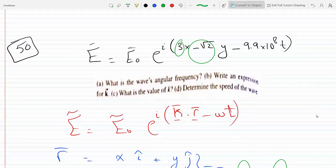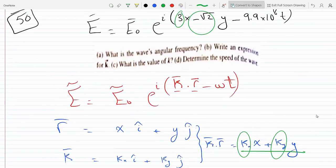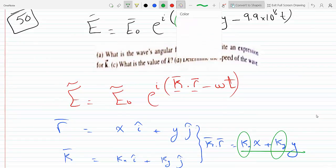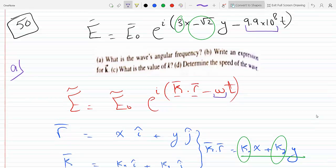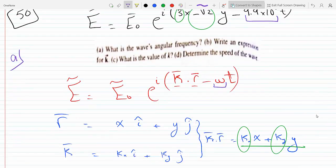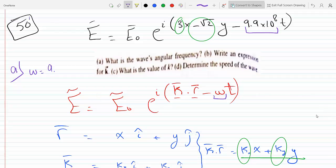The first question - let's start with part a. Part a is straightforward, you could read it from this. This omega here has to be this guy here, so omega, the angular frequency or the angular speed, is 9.9 times 10^8 radians per second.